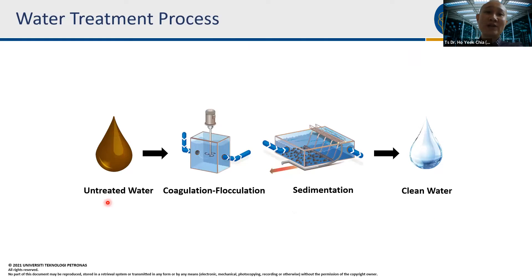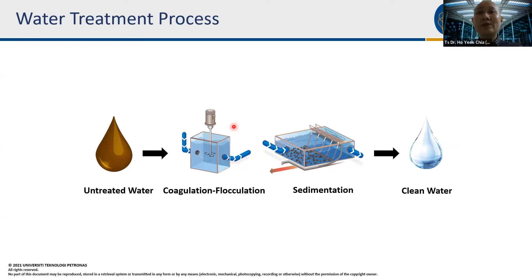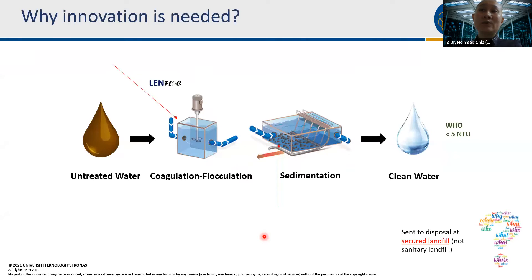Typically, in the simplest water treatment process, we take untreated water from reservoirs, rivers, lakes, or other intakes and pass it through a water treatment plant. The essential process is coagulation and flocculation — after adding chemicals, the dirty particles in the water settle down, and what we get is clean water. The chemical currently used is alum.